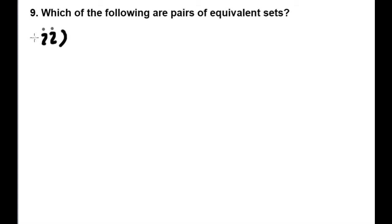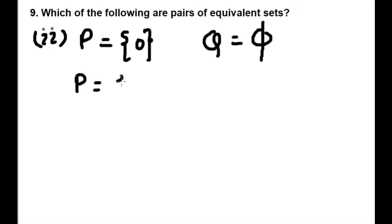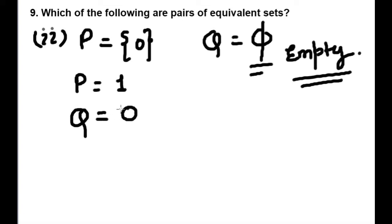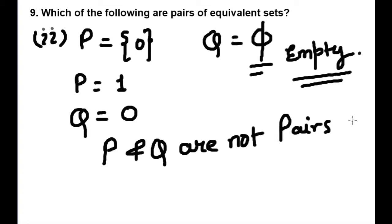Let's see next question, next second set. P = {0} and Q is a null set. Now here P has one element which is 0. And Q is empty, null set. So we can write P and Q are not pairs of equivalent sets.